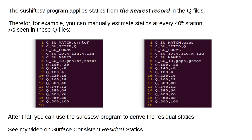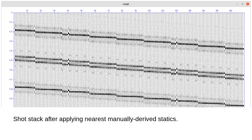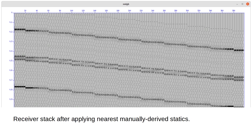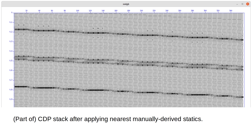After that, you can use the SU-RES-CSV program to derive the residual statics. The results show the shot stack after applying nearest manually derived statics, the receiver stack after applying nearest manually derived statics, and part of the CDP stack after applying nearest manually derived statics.